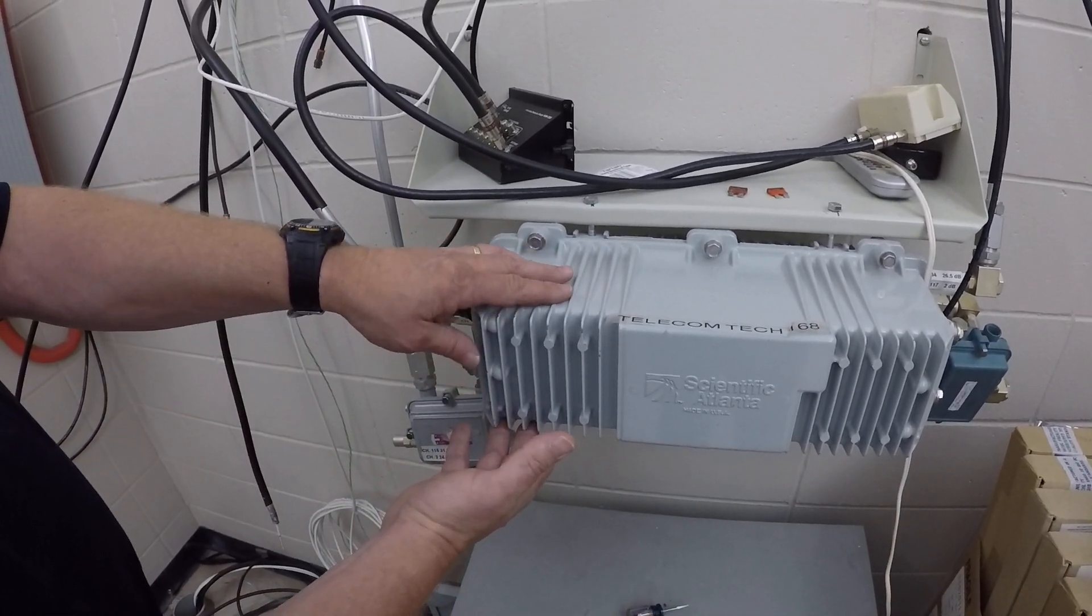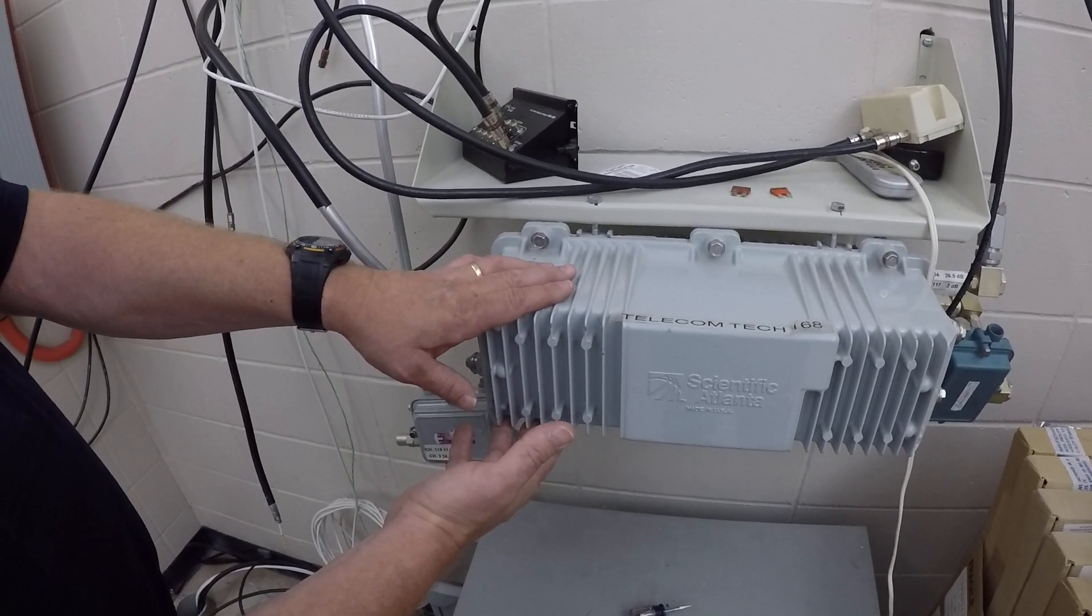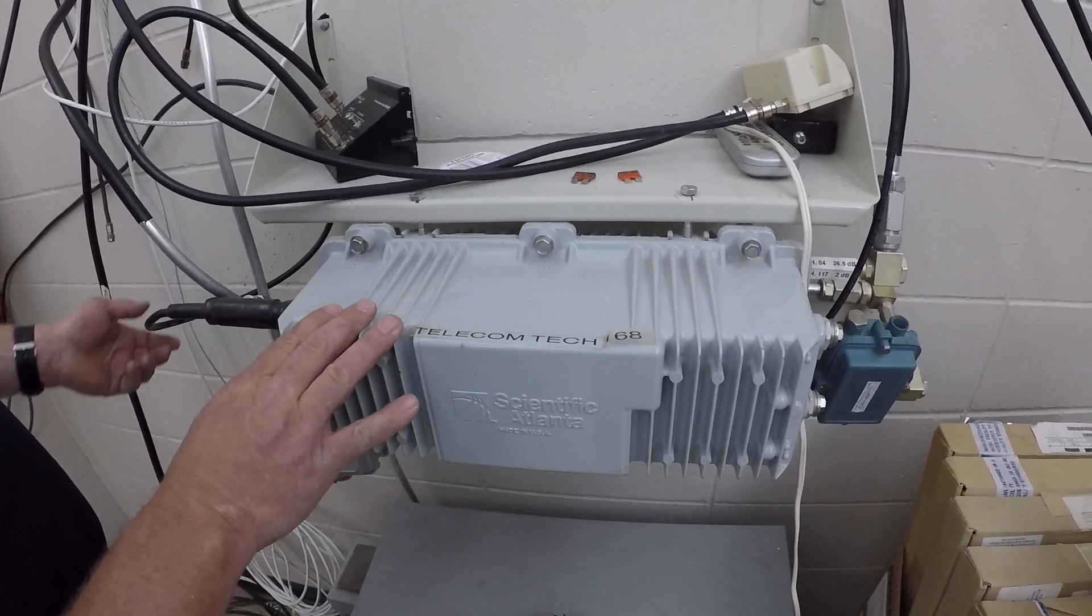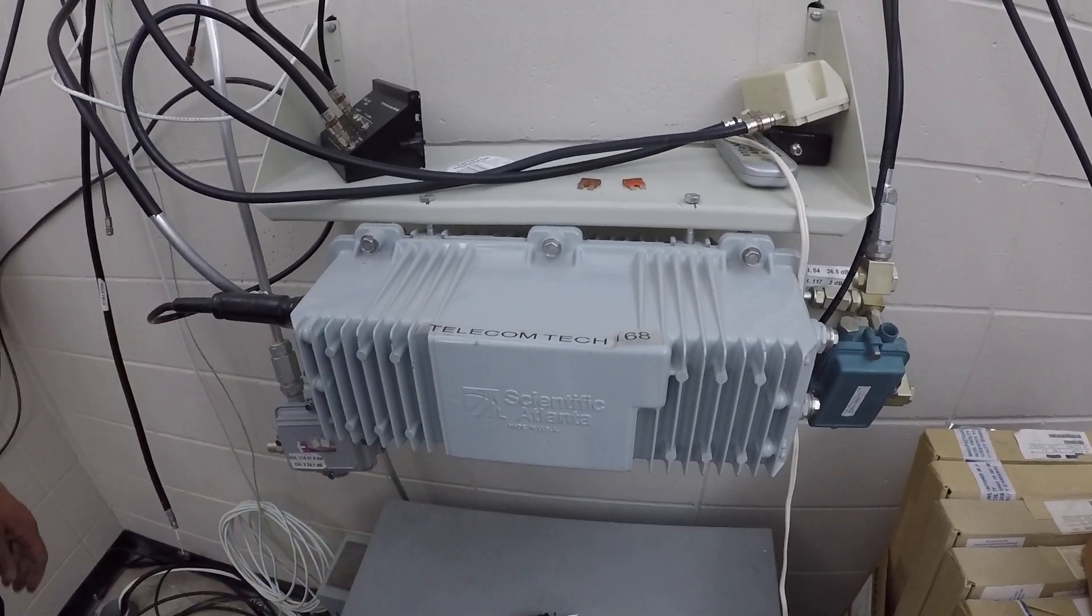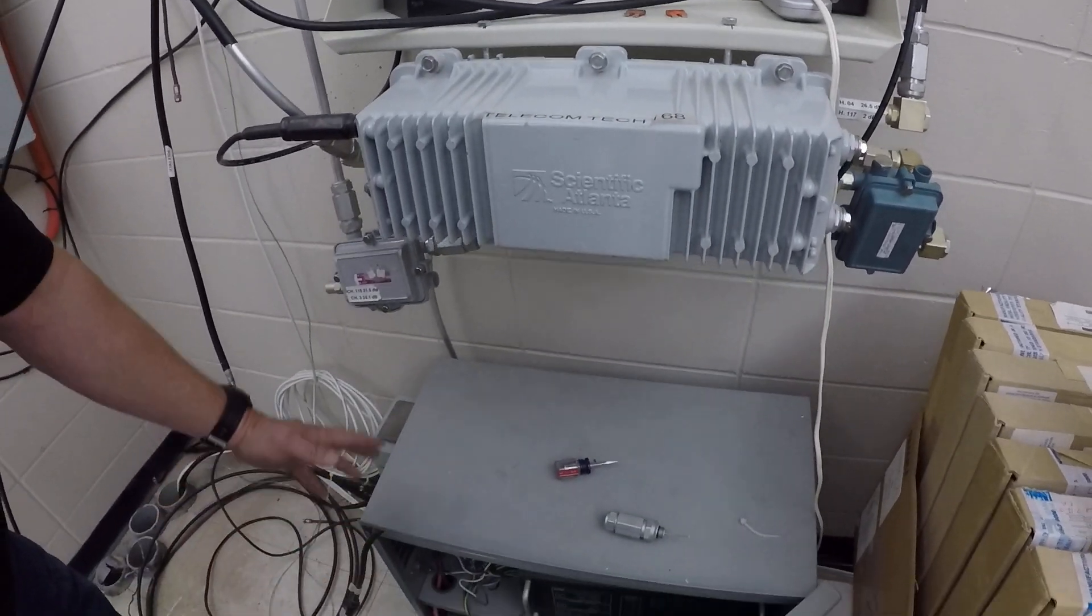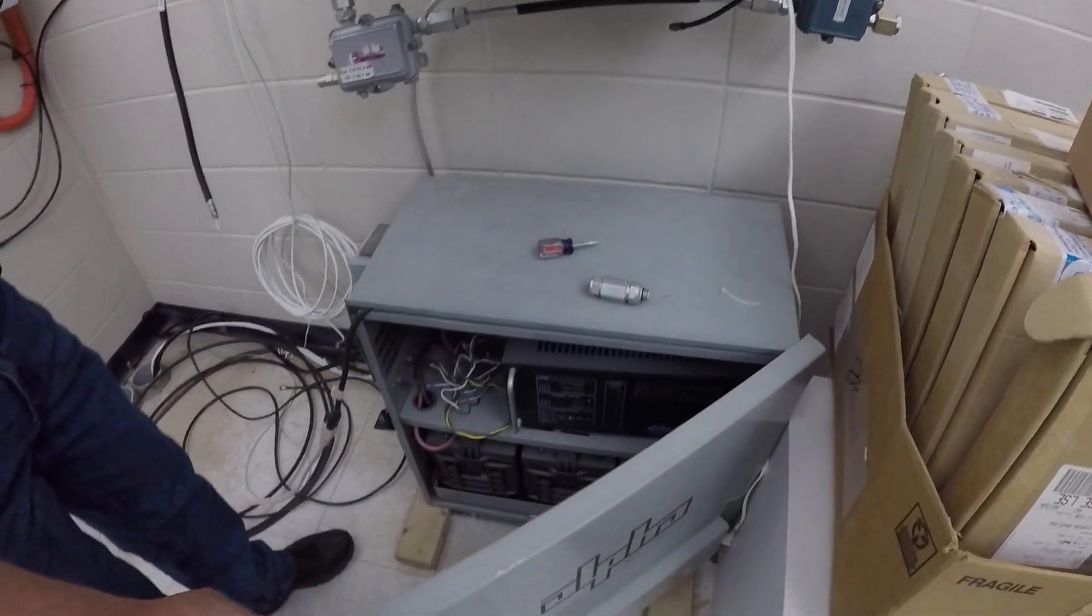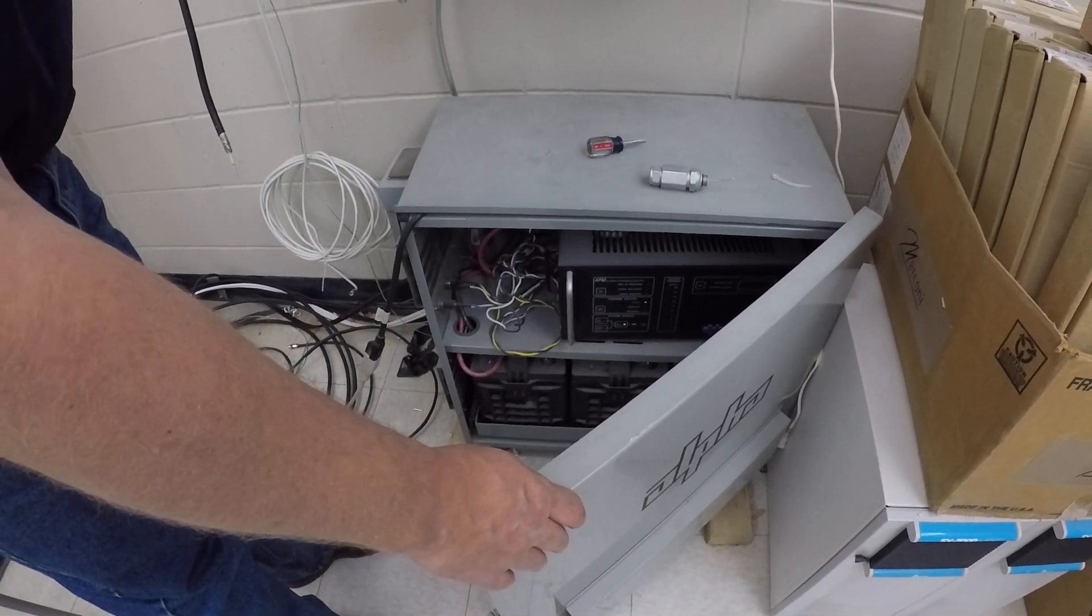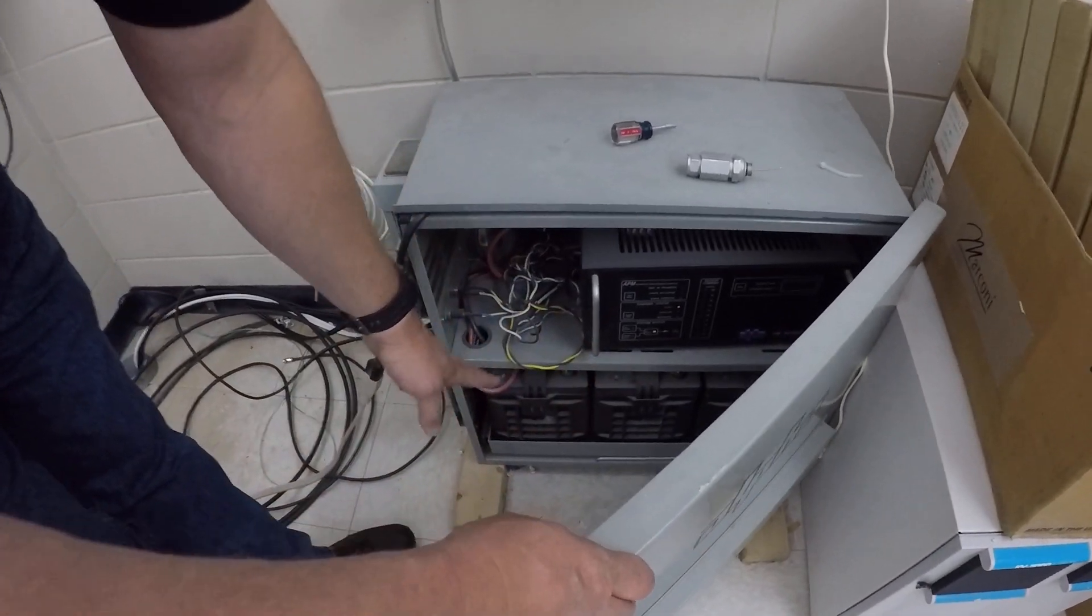So it converts that light signal into electrical form, RF. And to get power to this because light doesn't have any power, you need a power supply. This power supply provides power to this amplifier. So wherever there's an electrical or a fiber optic node, you're going to have some type of power supply that has battery backups.